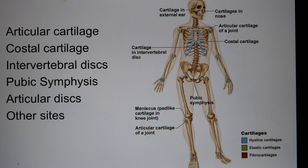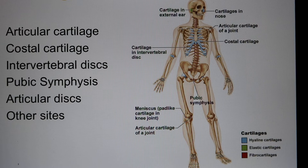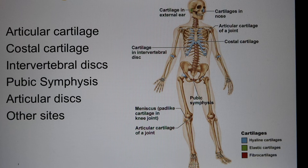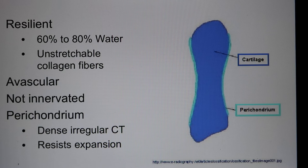The cartilage. Cartilage are soft bones. We talk about cartilage in the connective tissues. We have three different kinds of cartilages: hyaline cartilage, elastic cartilage, and fibrocartilage. Cartilage is mainly water — 60 to 80 percent water in their matrix.